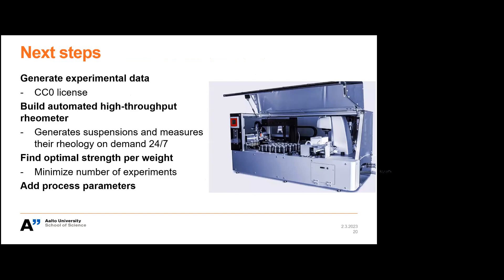So next steps. We are going to generate a lot more experimental data. We are going to put it online somehow for everybody to use. One idea is this AMAD system. Then we are going to build this automated high throughput rheometer. Basically this generates suspensions based on what the computer suggests and makes the measurement automatically over and over again. So basically it's making a mixture and making a rheological measurement and putting it online. That's the goal. And the goal is to find optimal strength per weight with the least amount of experiments made by humans. And also we want to add process parameters. This is a kind of industrial direction that if we want to optimize factories to mimic from the lab scale machine to the big pilot machines and to the factories.